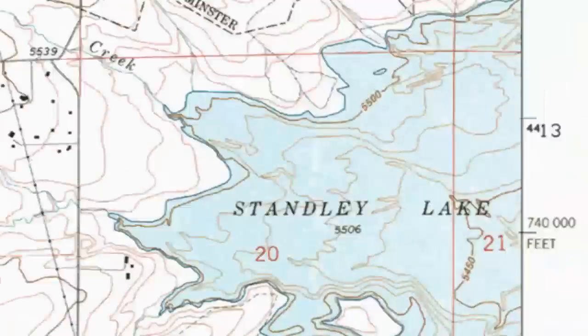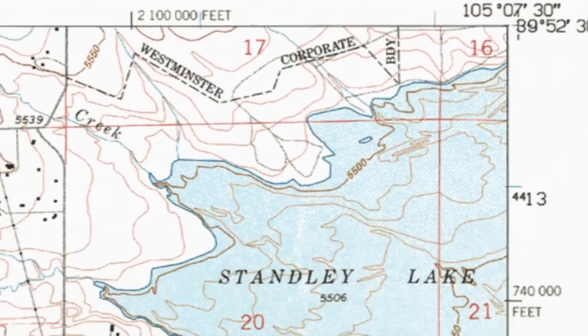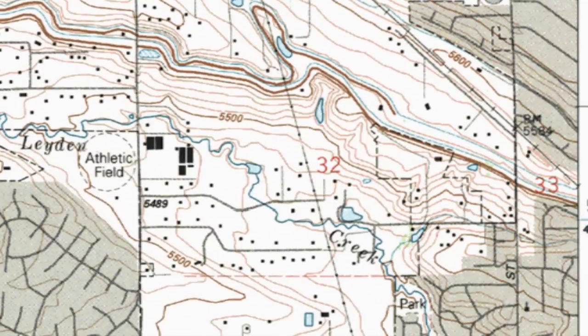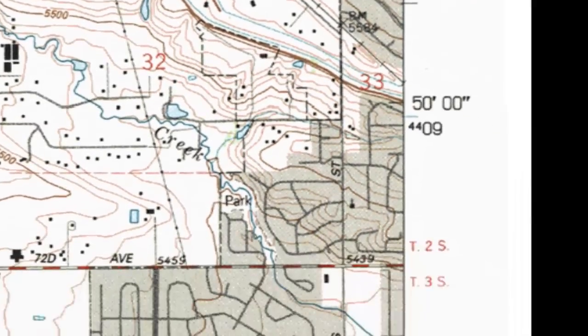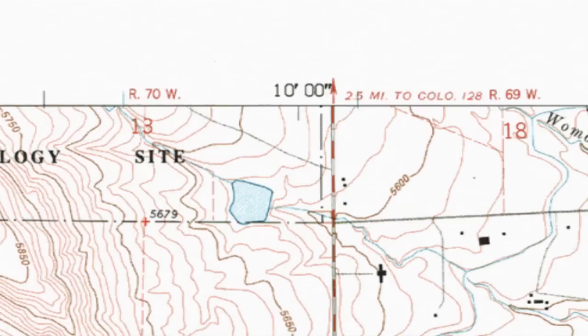Returning to the upper right corner, under the quadrangle name we see a general location of Jefferson County in the state of Colorado. Below this we see this is a 7.5 minute series, which details how much latitude and longitude are covered by the map — and we will take a closer look at that in our next episode. Many USGS maps use not only latitude and longitude to give spatial coordinates, but also the USPLS system, whose designators are given in red.